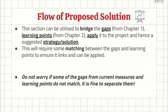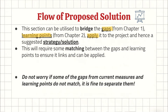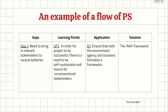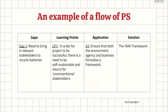The next part is the flow of proposed solution. This section bridges the gaps from chapter one — the current measures introduced in the introduction — the learning points from chapter two, and how you apply them to your project, hence suggesting a solution or strategy. This requires some matching between the gaps and learning points, but don't worry if some gaps and current measures don't match — it's fine to separate them.